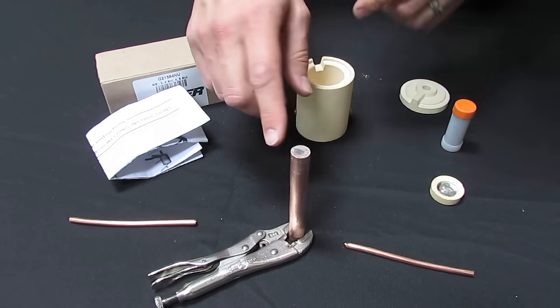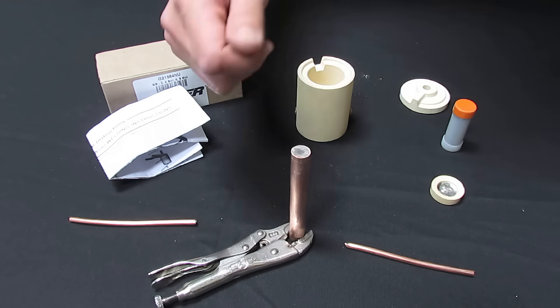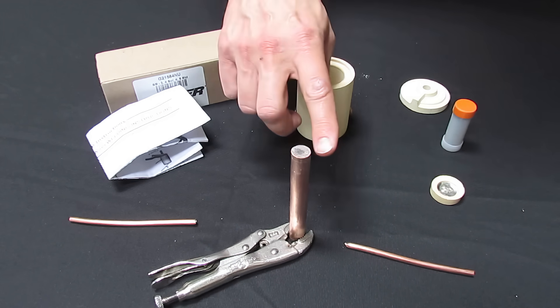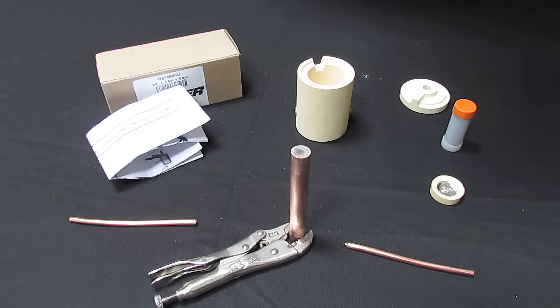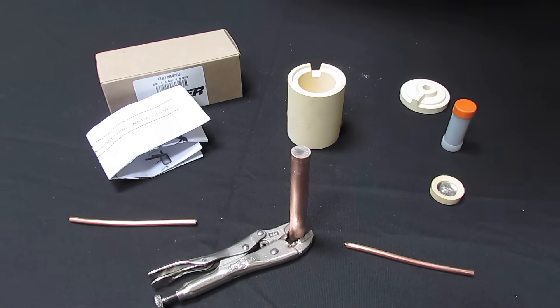Secondly, if the top of the ground rod has mushroomed out and deformed because of pounding it into the ground with the big hammer, you'll need to cut that mushroom off or it won't fit through the hole in the bottom of the crucible. So the easiest way to do that is with a hacksaw, a sawzall, or an abrasive disc of some sort.